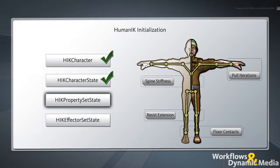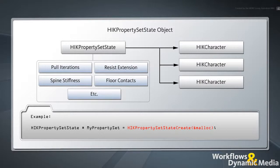Next, you need to create an HIKPropertySetState object to define a set of optional attributes related to how the HIK solvers handle your HIKCharacter. This includes properties such as floor contacts, joint mirroring options, spine stiffness, and so on. Call the HIKPropertySetStateCreate function to create it with only a memory allocation callback function as an argument. Note that this solver property object does not directly serve a specific HIKCharacter or HIKCharacterDefinition, because HIKPropertySetState contains the same properties for all HIKCharacter instances.